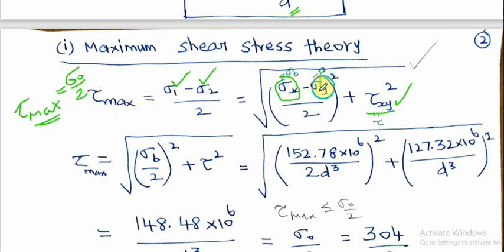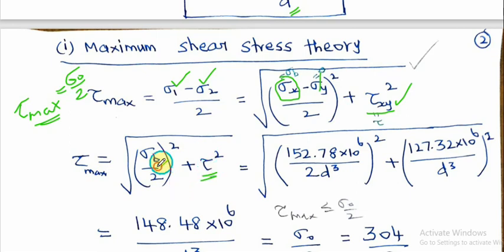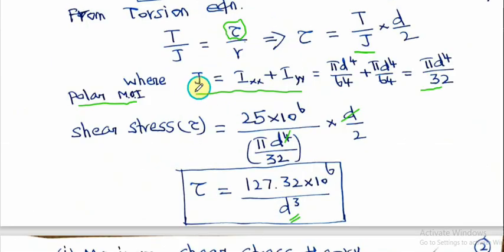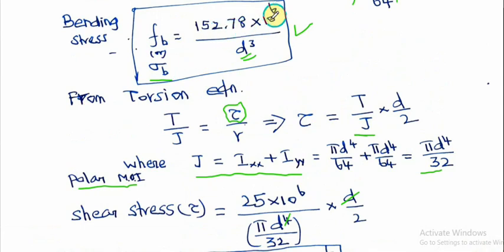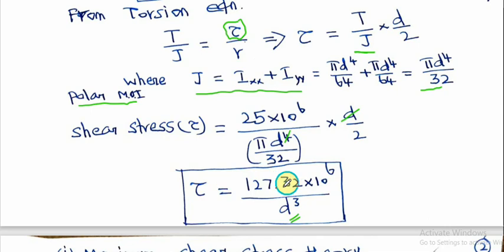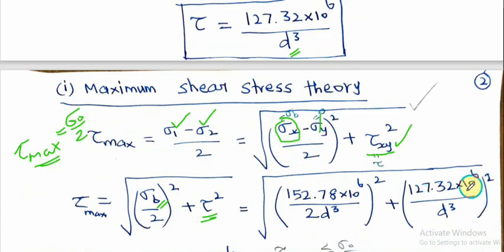Since σy = 0 (bending moment acts as bending stress σx only), the formula simplifies. The principal stress σp equals σx/2 plus or minus the square root of (σx/2)² + τ². In terms of d³: σb/2 = 76.39×10⁶/d³ and τ = 127.32×10⁶/d³, so τ² = (127.32×10⁶)²/d⁶.